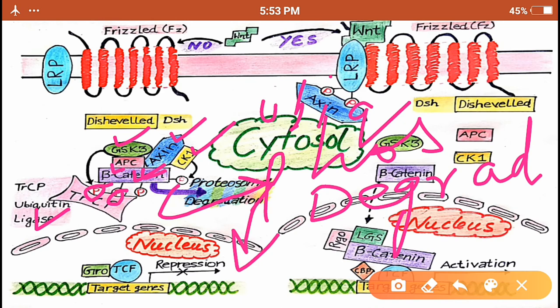There is something more to know. In the nucleus, there is TCF, a transcriptional factor, which is bound to the target genes, but it is not able to function. One reason is that the beta-catenin is not here. The other reason is this grow protein, which is acting as a transcriptional repressor and it is not allowing the transcription to occur.